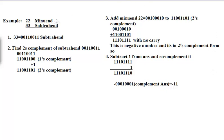Hi everyone, today I'd like to show how to make a two's complement subtraction. In this video we can see how to subtract a bigger number from a smaller number. For example, if I want to subtract 33 from 22, in the general way 22 minus 33 is minus 11, but with the help of two's complement form we have some steps.